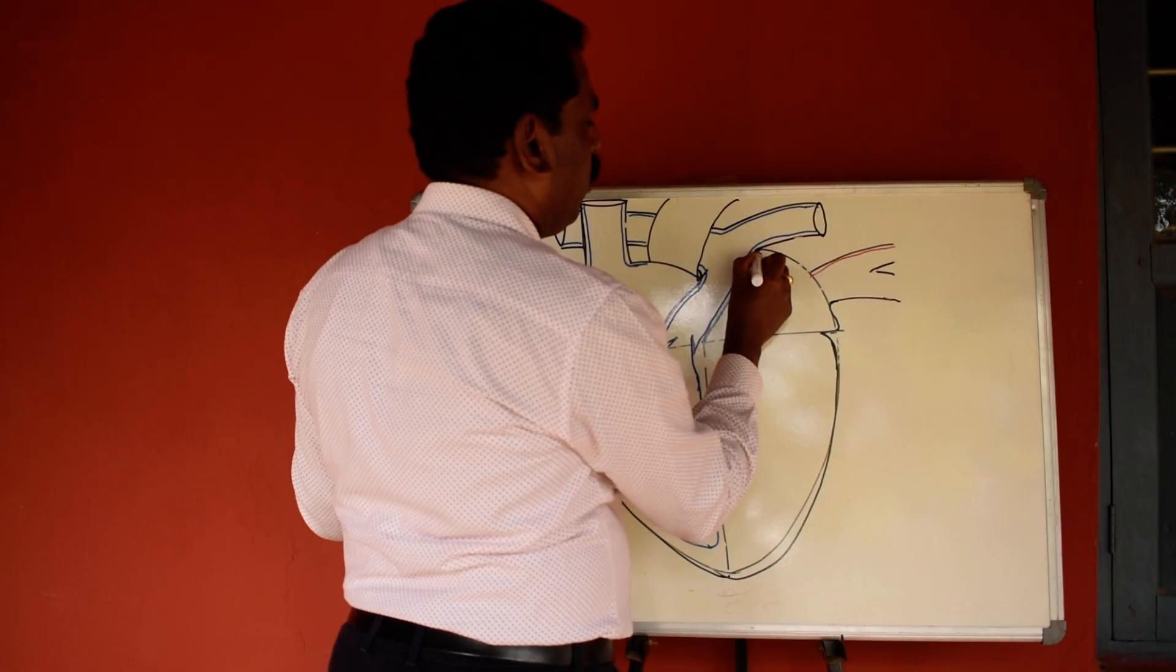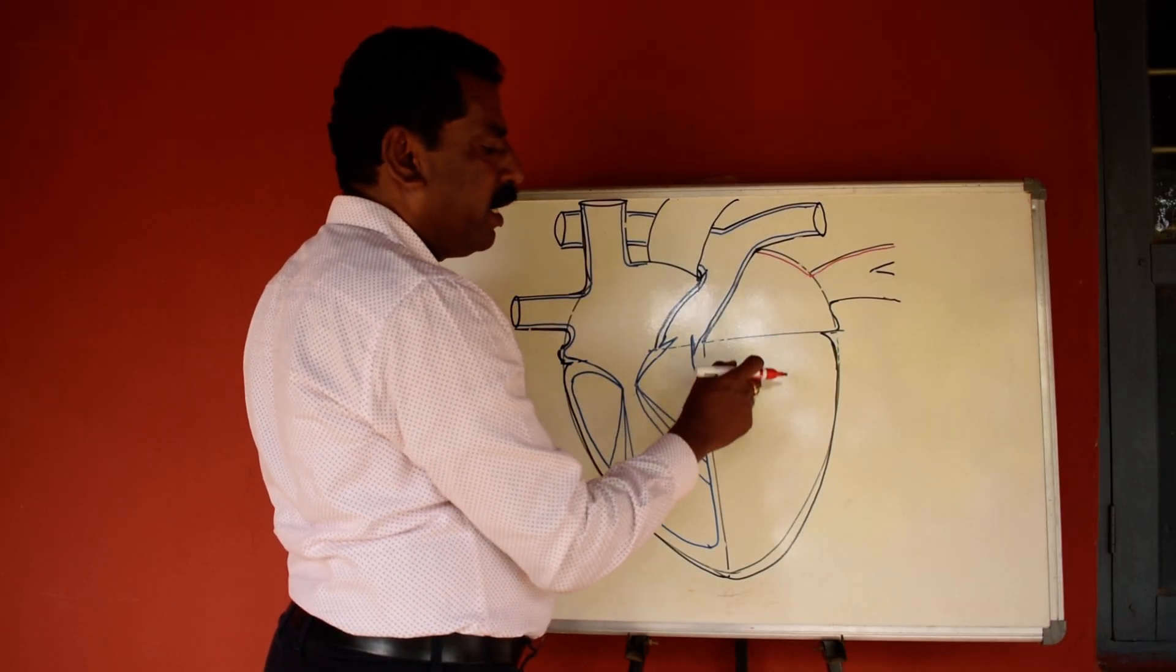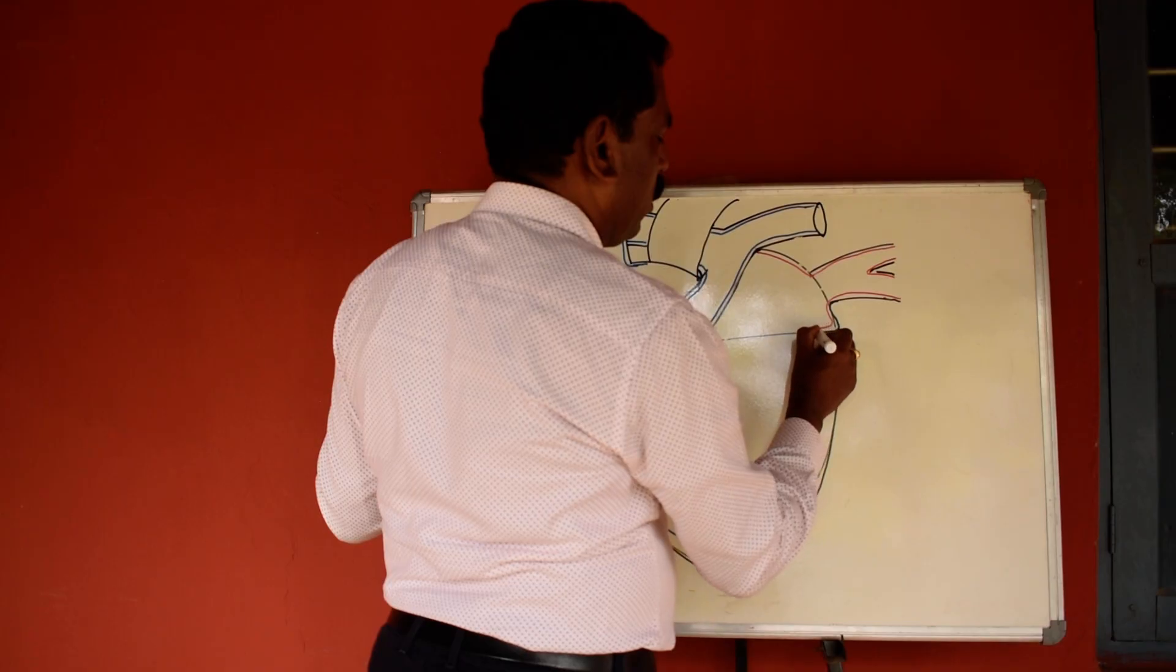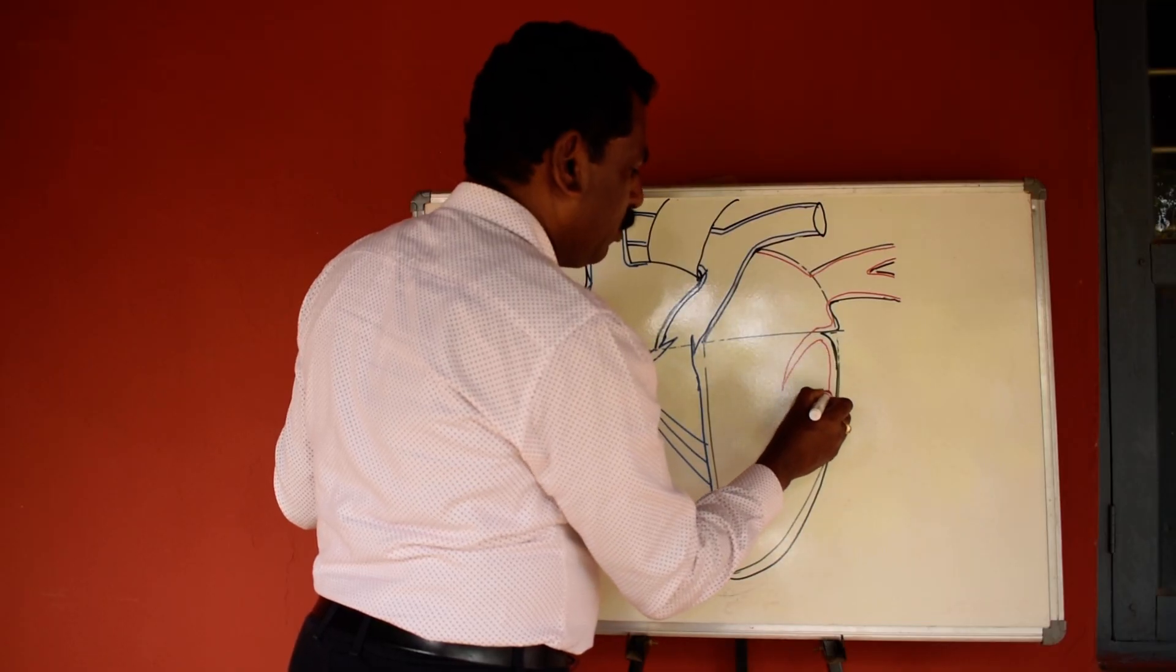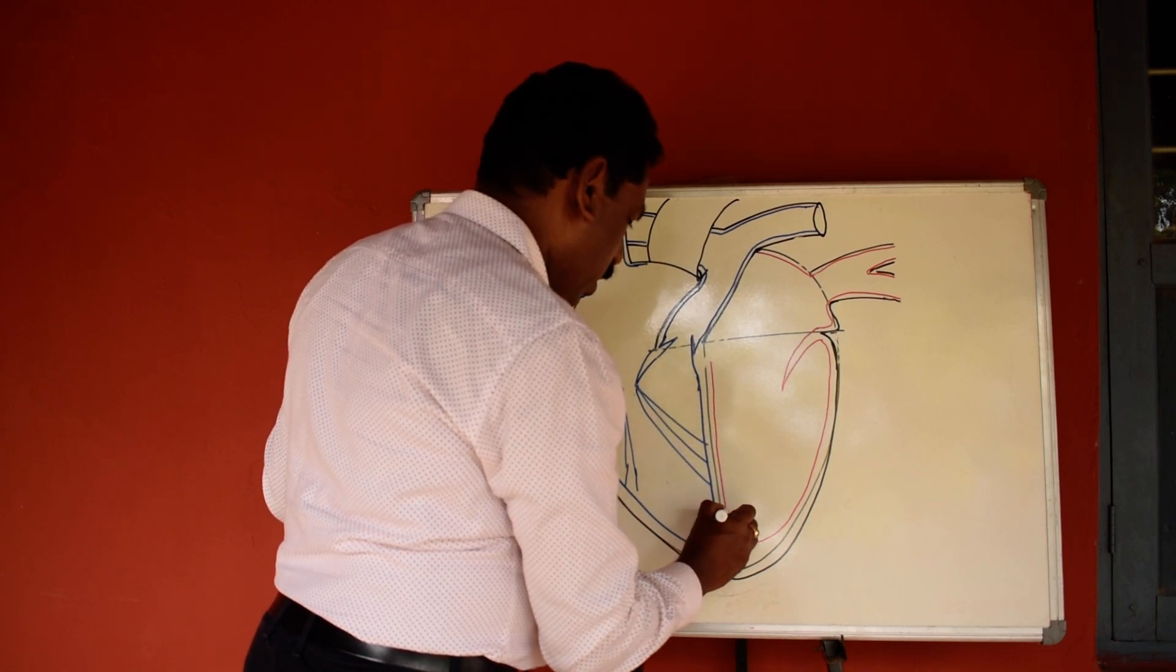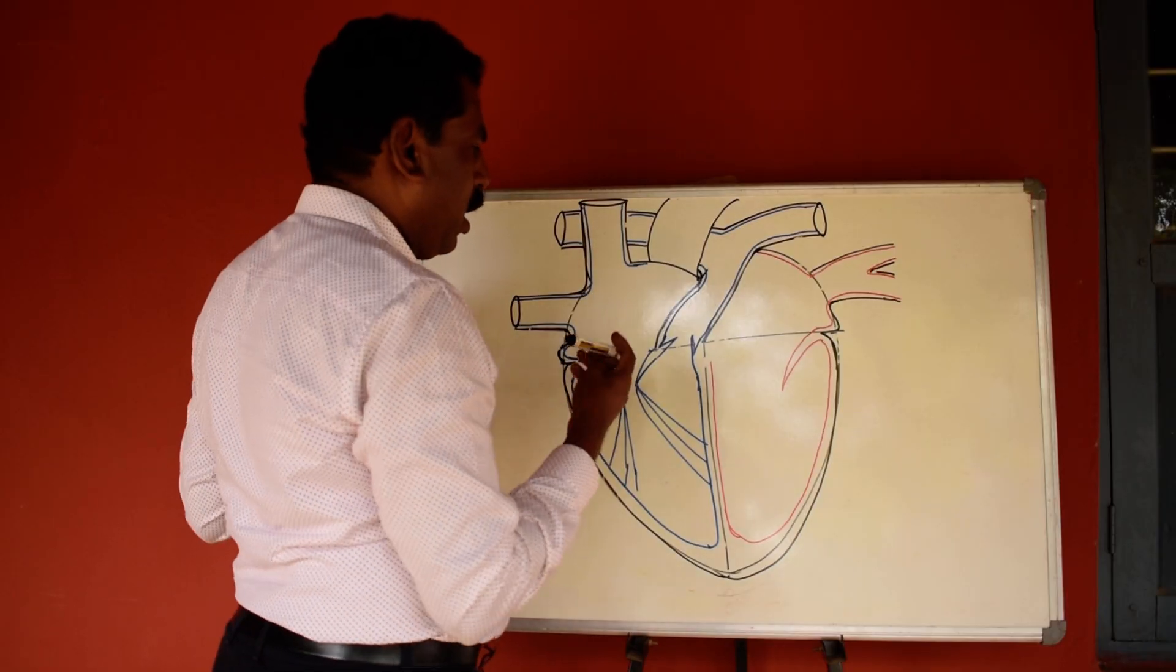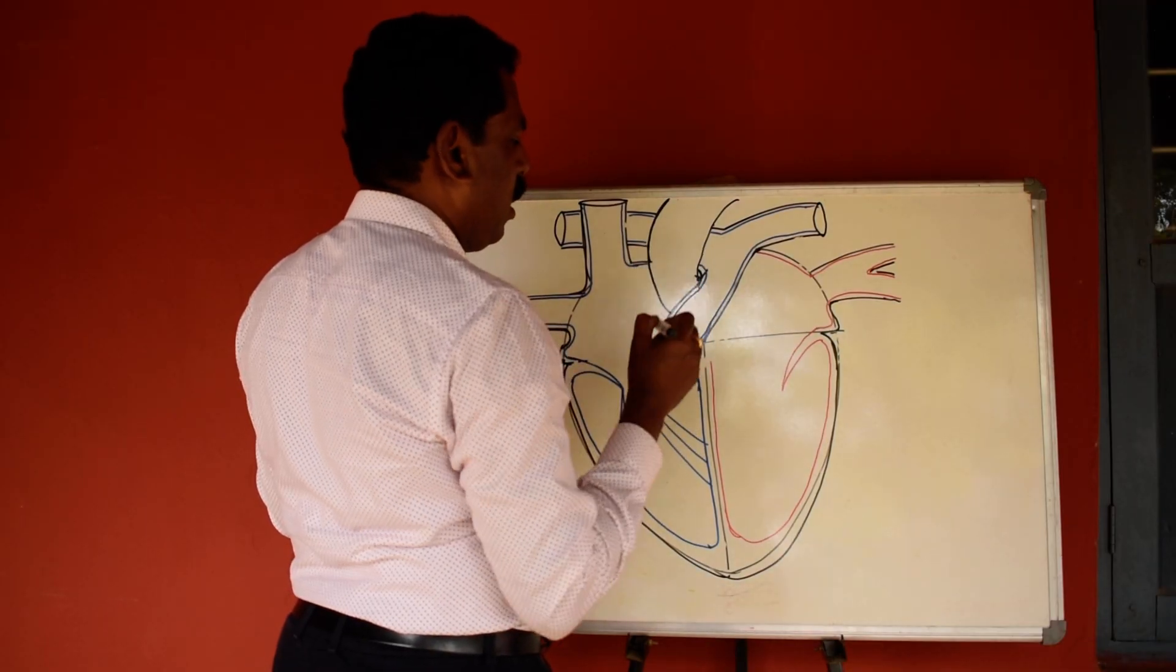So here I will continue with the red marker. It indicates oxygen-rich blood circulates through these chambers. Again here also bicuspid valve comes the same way.